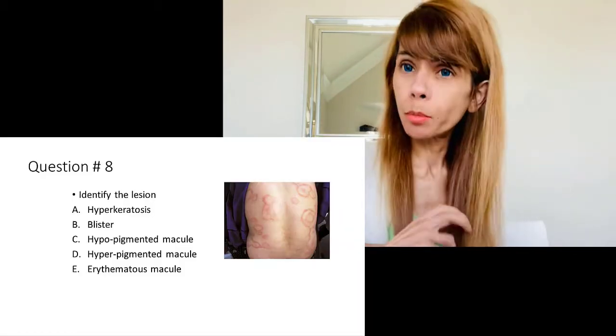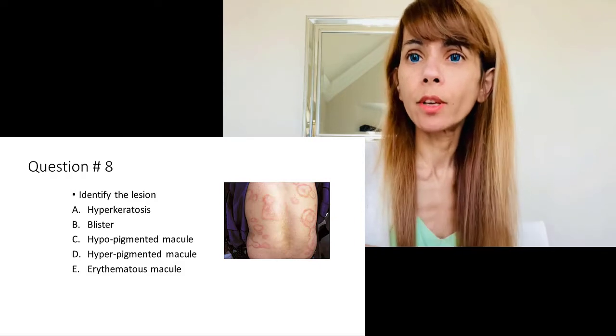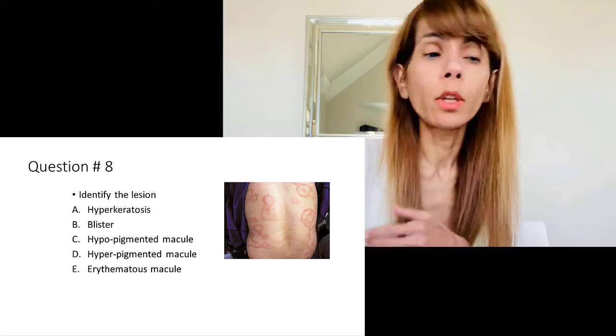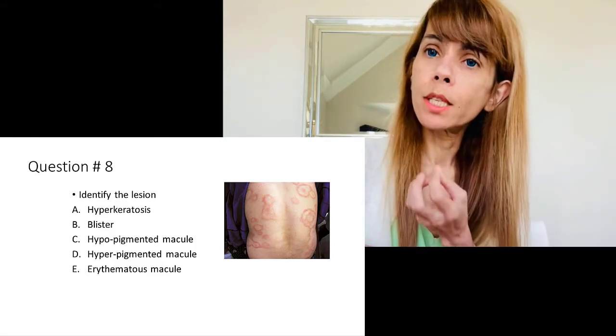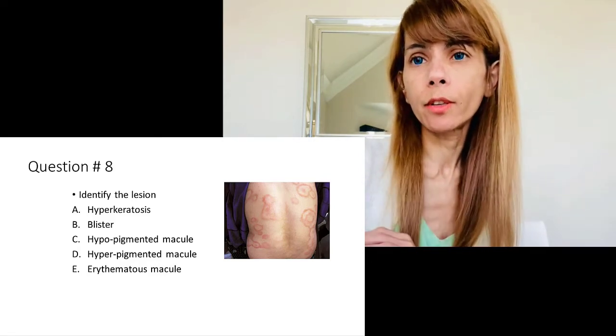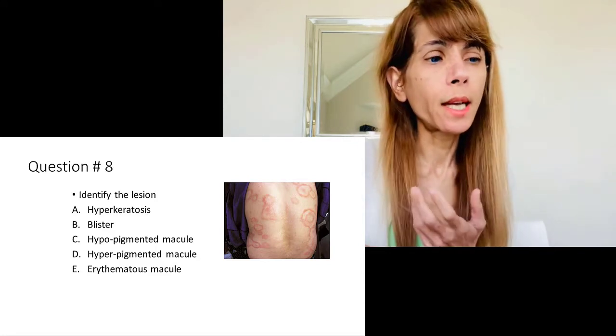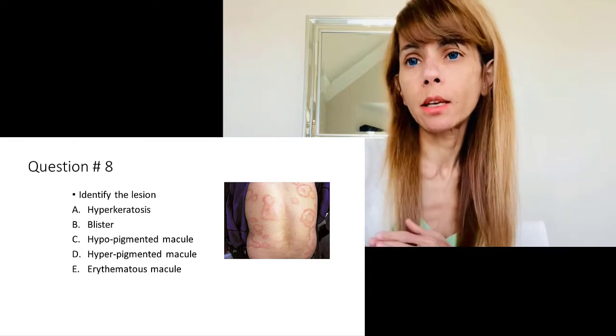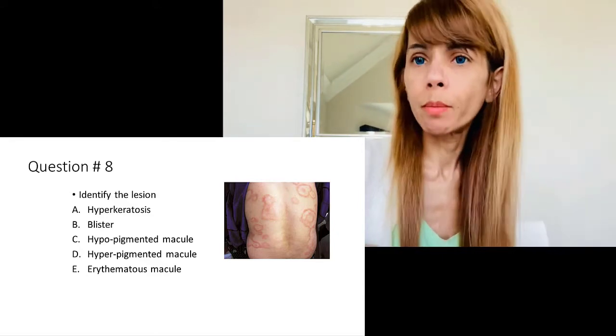Question number eight is a lesion on the back of a patient. It is flat, so it is a macule. It is hypopigmented — you can see depigmentation in the skin in some areas. Although the borders of the circles may appear darker due to contrast, it is hypopigmented macules. Can you guess the diagnosis? It is tinea versicolor, a fungal infection. We'll get into more specific conditions as we move forward.